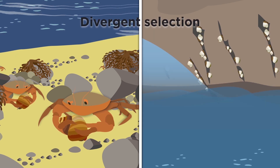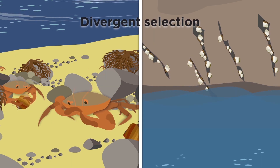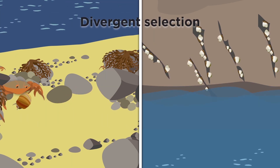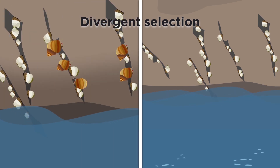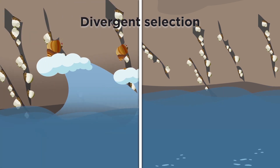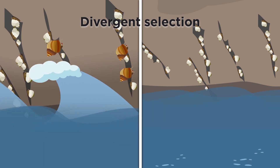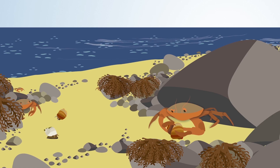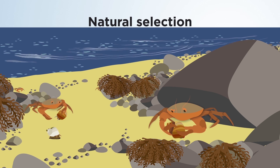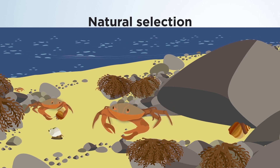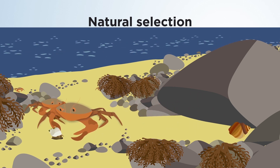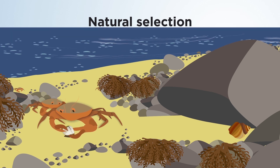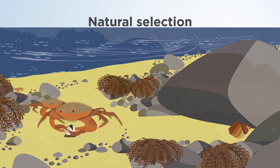Through specific traits being favoured by natural selection in each environment, populations can diverge in different parts of the shore. Crab snails in the wave environment are not well adapted and are less likely to survive and reproduce. The same is true for wave snails in the crab environment. Those with beneficial traits will survive and reproduce, passing on their characteristics to the next generation. This is natural selection.